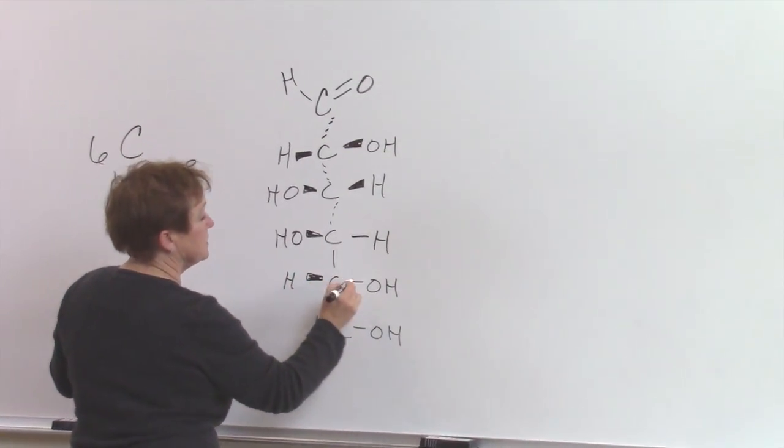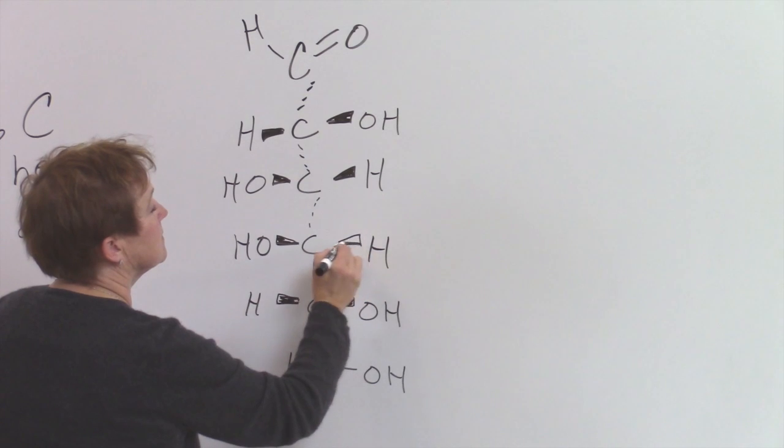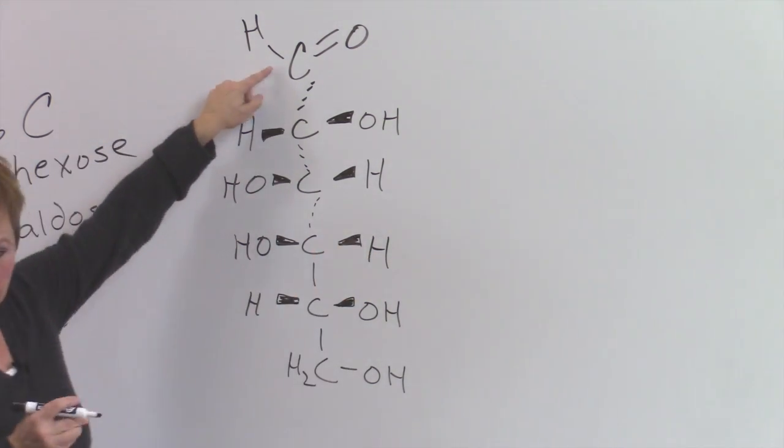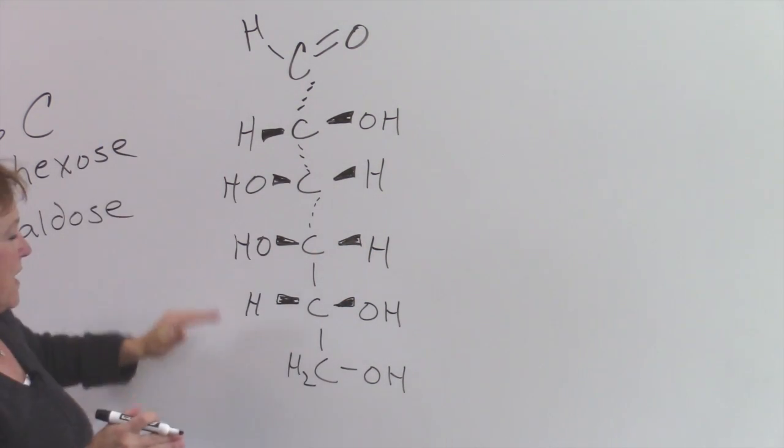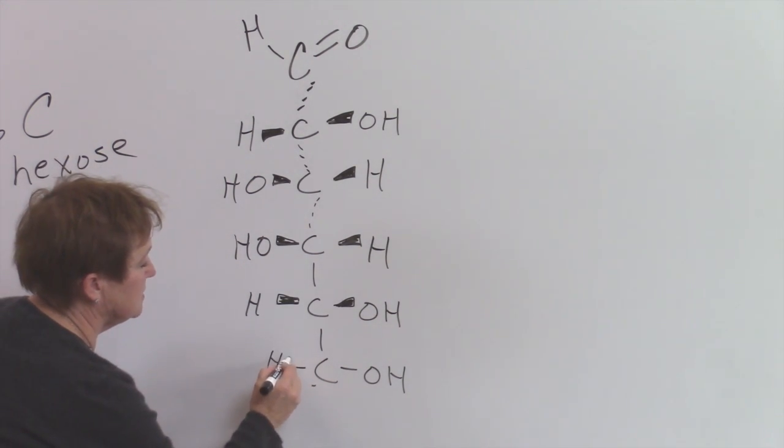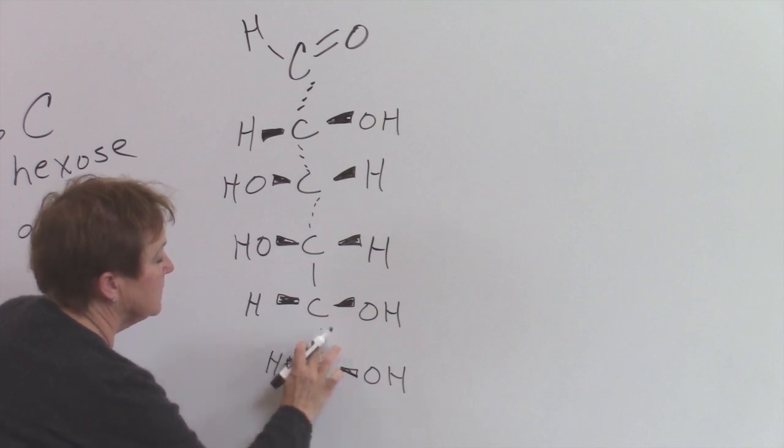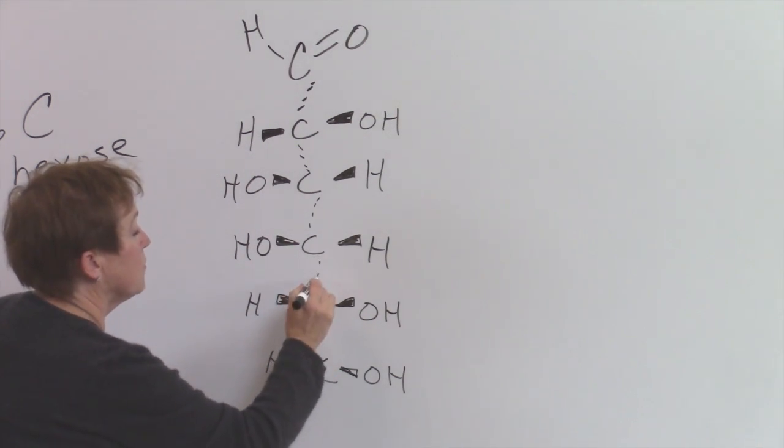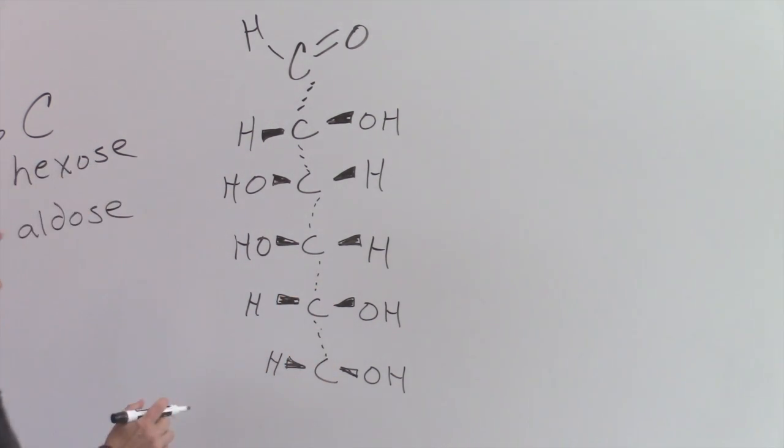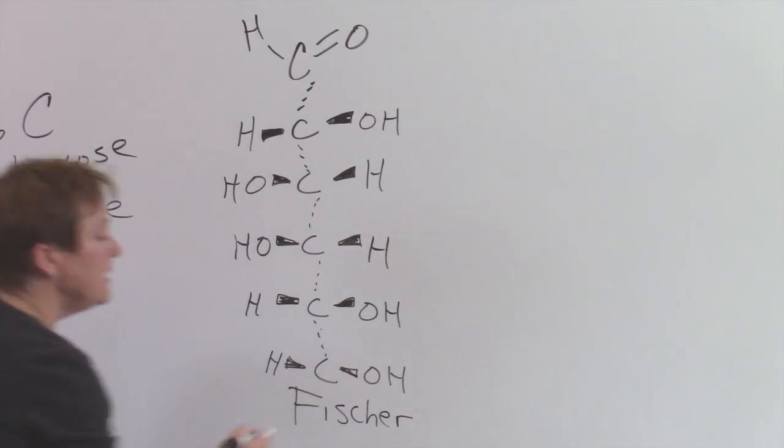This is how this is supposed to look in a Fisher projection - a three-dimensional representation. This one is trigonal planar so it's flat. On the bottom you would have the H like that and the OH like that, and then these are all going forward and back in the plane of the board.